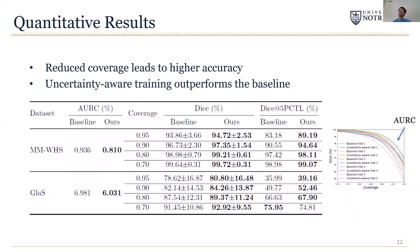Here is some quantitative results. The overall selective segmentation performance is measured by AURC, which is the area above the dice coverage curve. Due to the time limit, I will skip the details and you can find the detailed discussion in the paper. In summary, the results here confirm that our method outperformed the baseline.